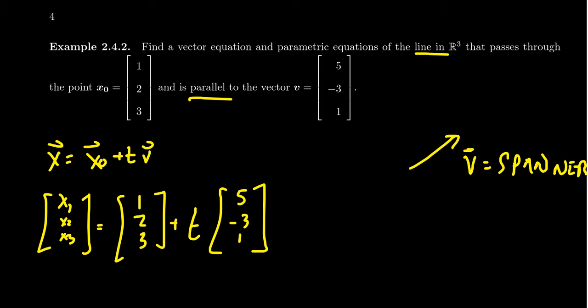But if we go one more step here, we essentially have our parametric equations here. We have that the first equation, X1 is equal to 1 plus 5T. You'll notice if you look at just this equation right now, this is a linear equation with respect to the variables X1 and T.